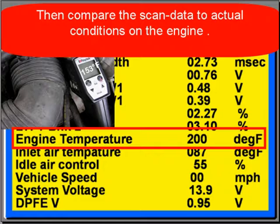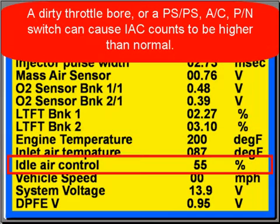In this example, our Raytech gun is measuring at the temperature sensor 150 degrees Fahrenheit, and our scan data says 200 degrees Fahrenheit. This is where you have to go test the sensor and its circuit when they don't agree with actual conditions.